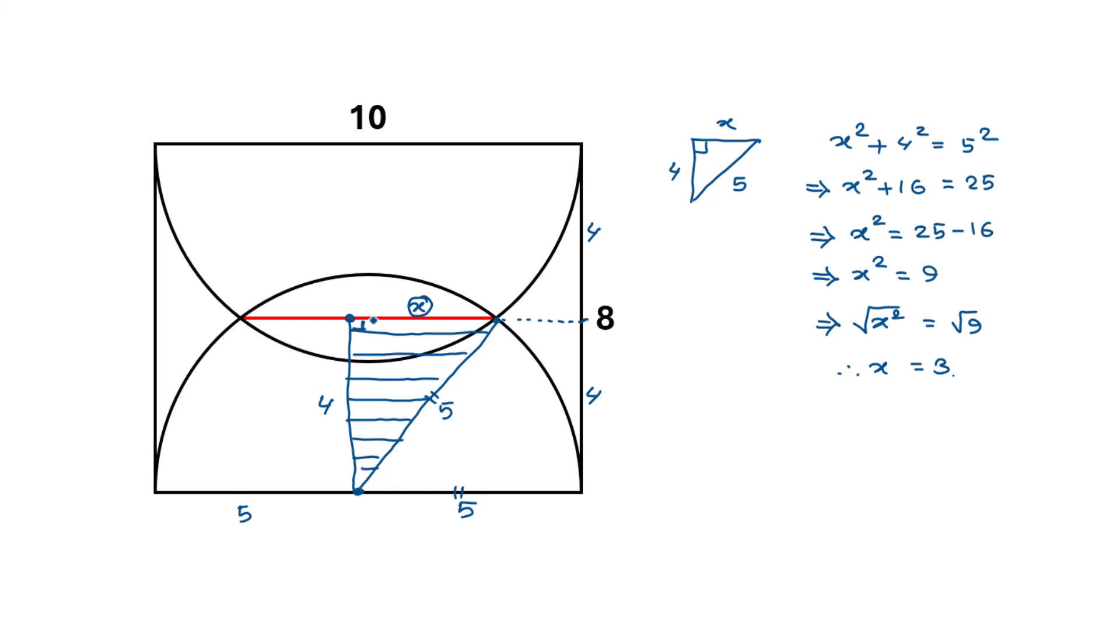Our goal is to find the length of the red line, so our desired length is equal to 2 times x because this length is also x as this point divides this red line into 2 equal parts.